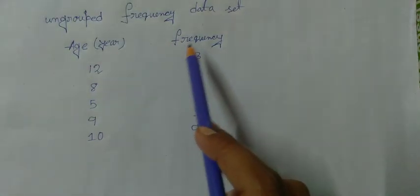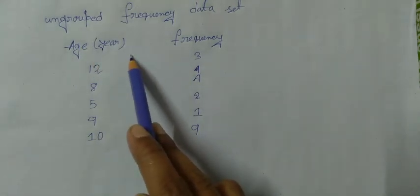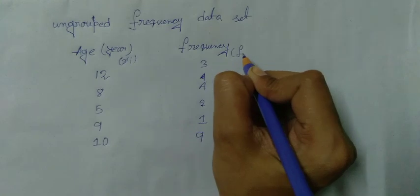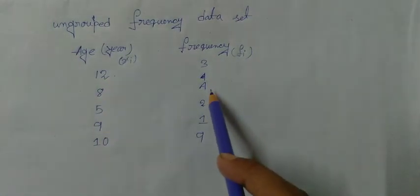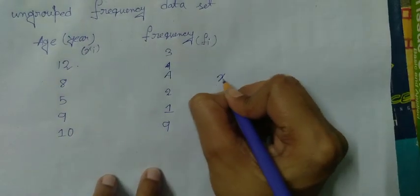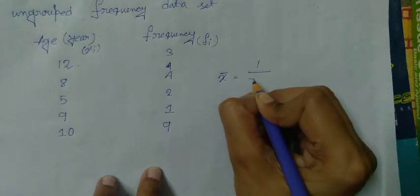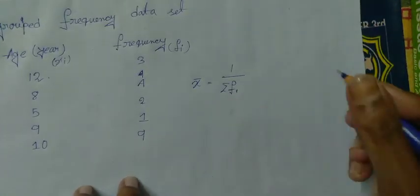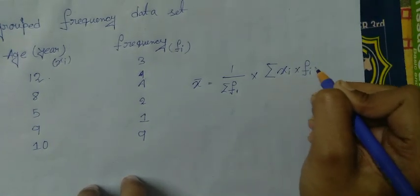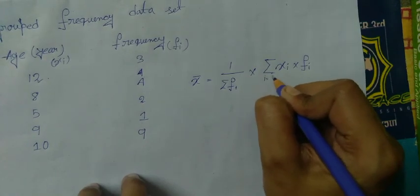So now ungrouped but frequency, ungrouped frequency data set. So this data set is ungrouped but frequency data set. Here age and frequency. If we considered age as xi and frequency fi, so this is x1, x2, x3 and so on and f1, f2, f3 so on. So here the formula is x bar is equal to 1 by summation of f into summation of xi into fi where i is equal to 1 to n.